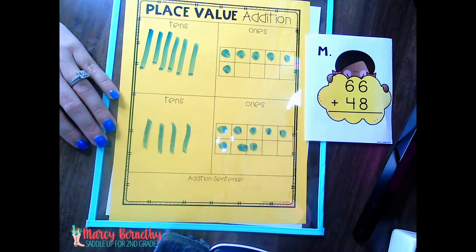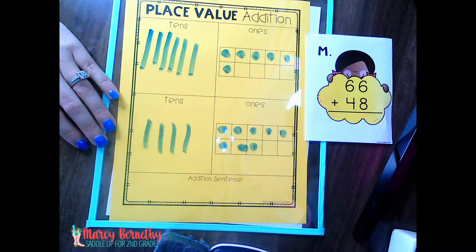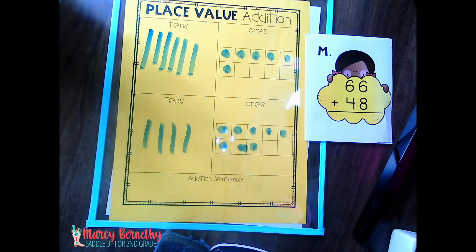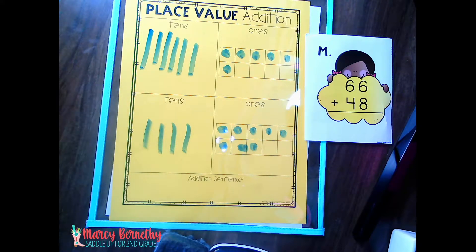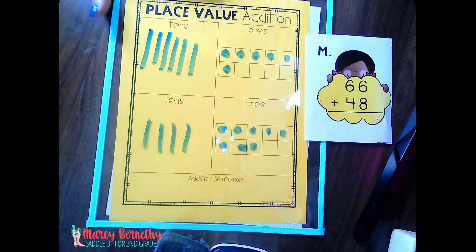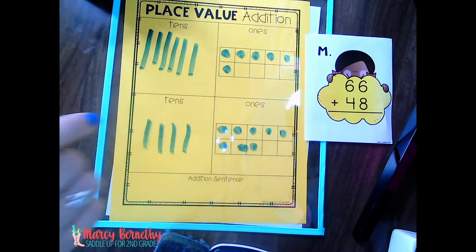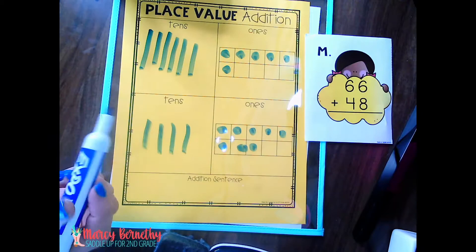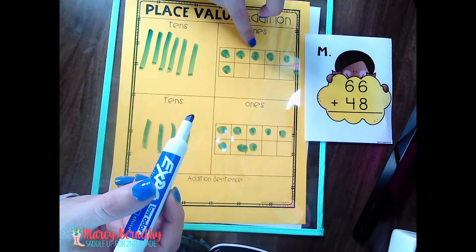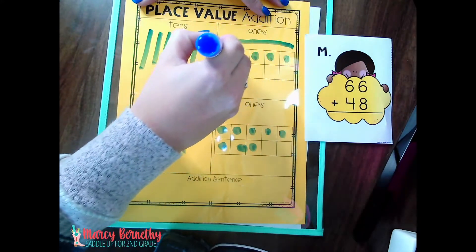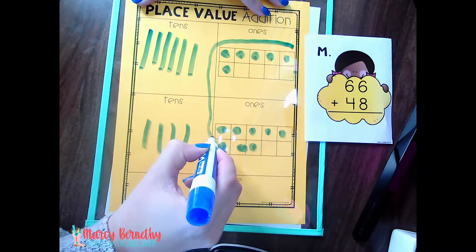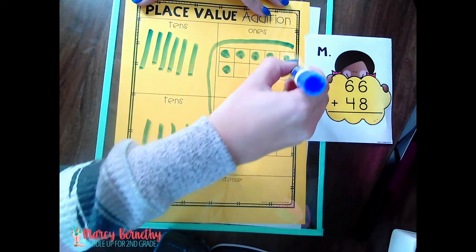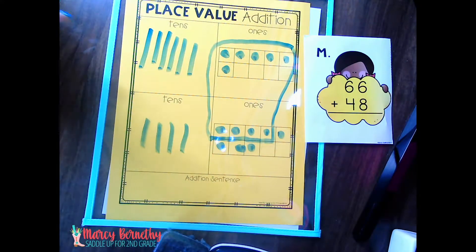And we can because we know that 10 ones is the same thing as one 10 block. So what they're going to do is you can either have them physically move 10 ones blocks, or if they're drawing it out, I would have them circle. So I've got six here. One, two, three, four, five, six. And I need four more. So six, seven, eight, nine, ten.